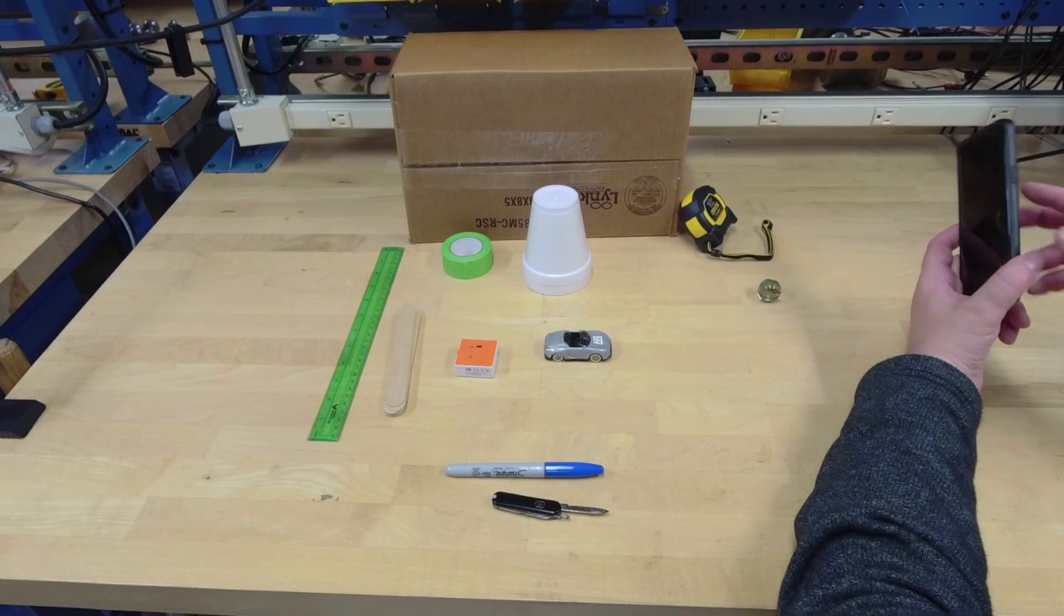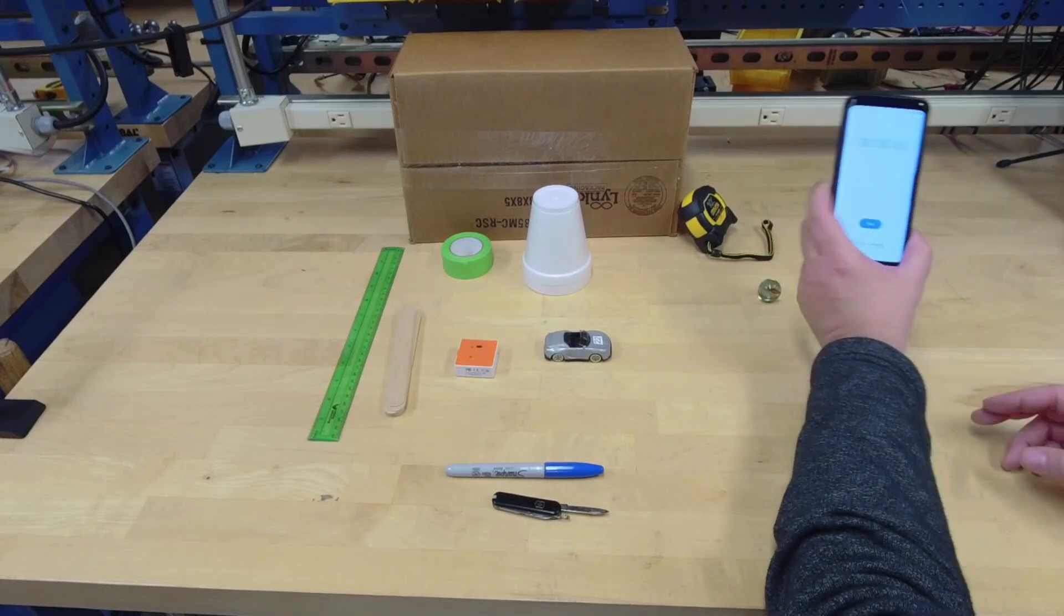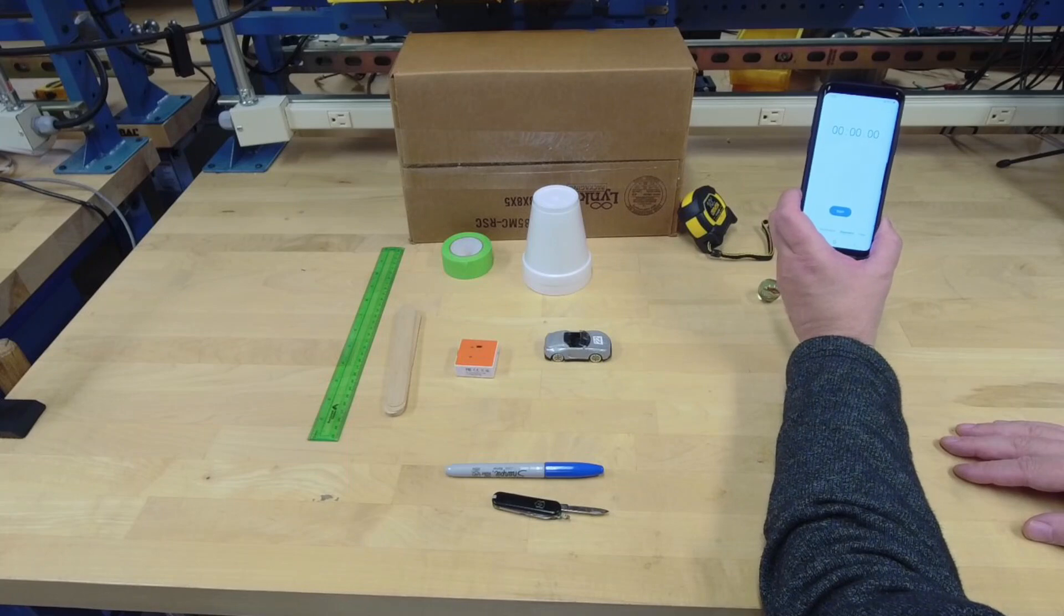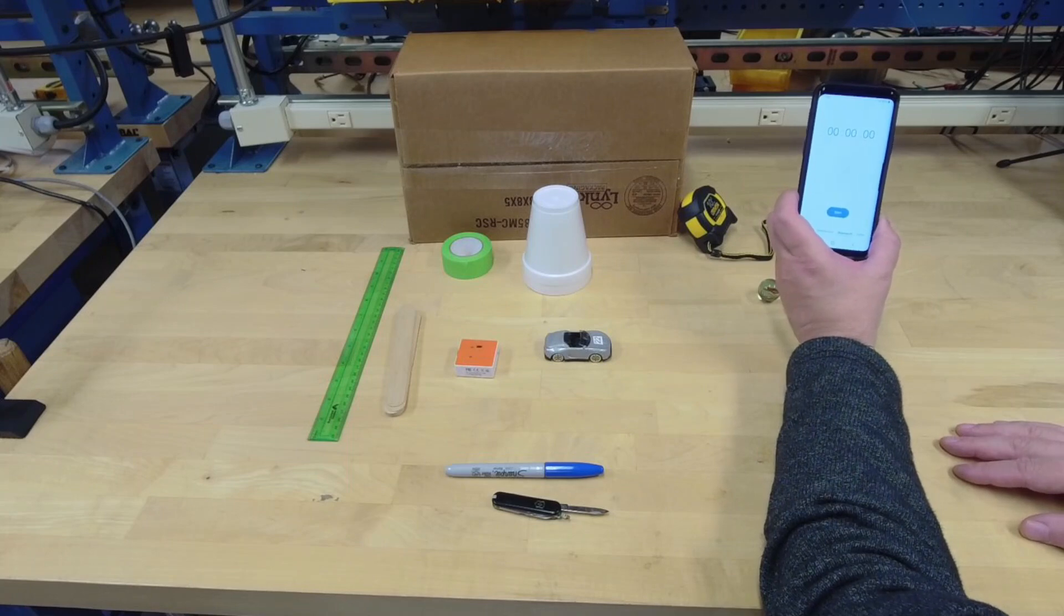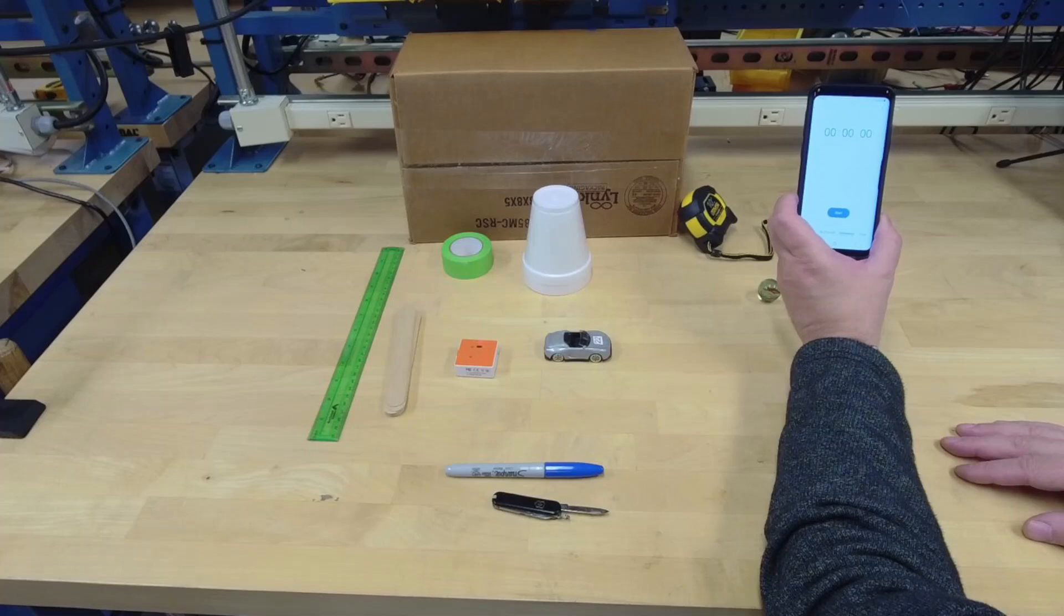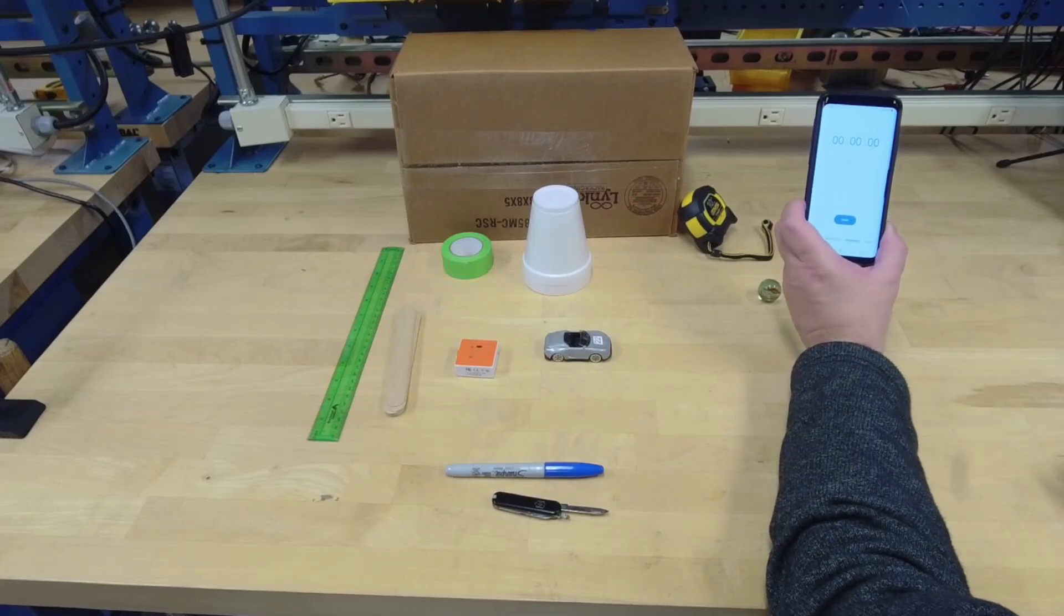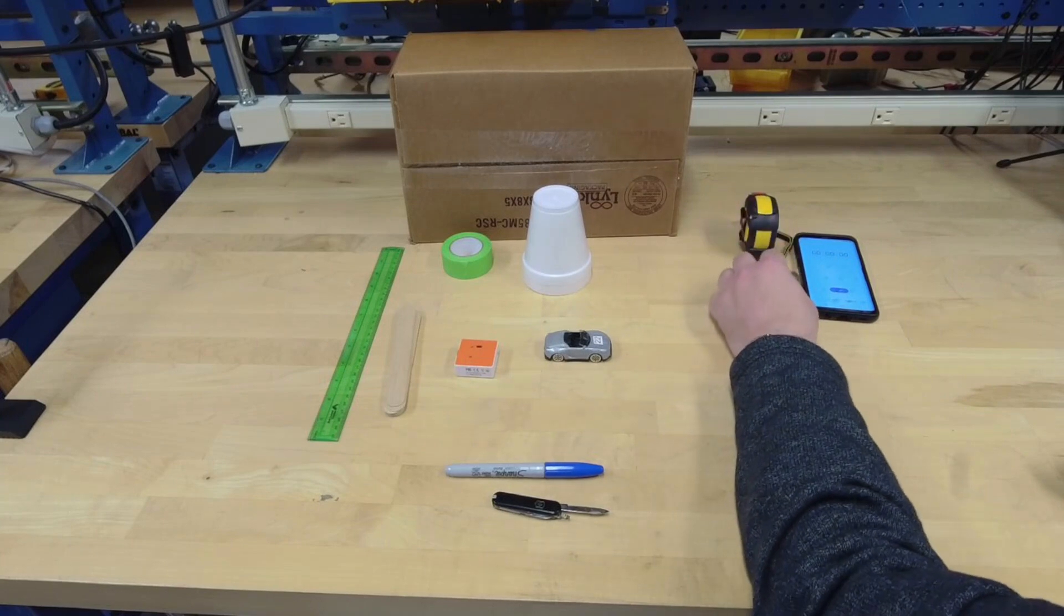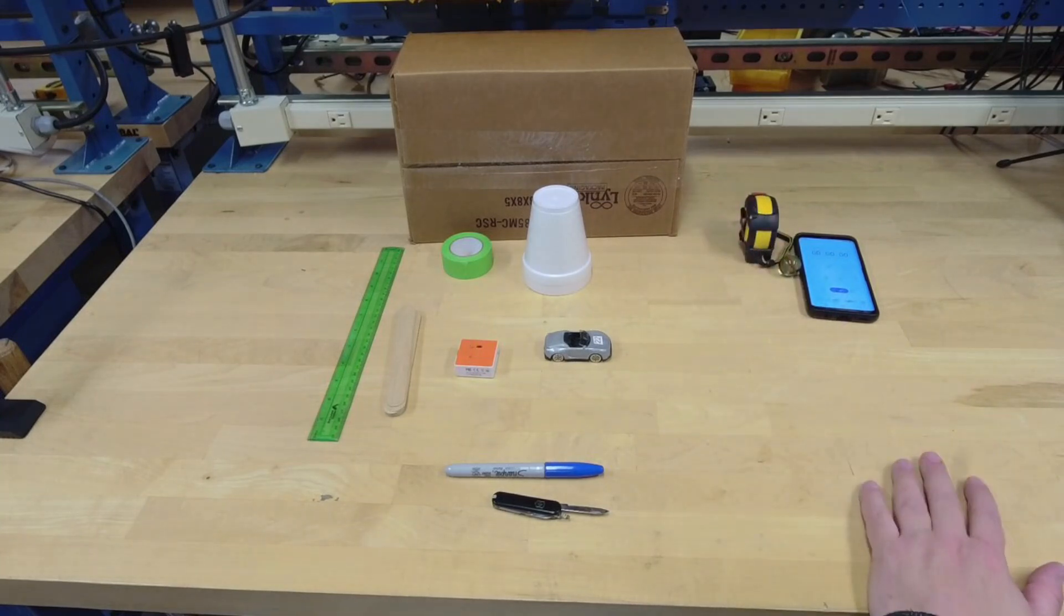You'll also need a stopwatch. If you have one, you can use that, although almost all cell phones have a stopwatch built in. I use Android, so I just hit timer and select the stopwatch function. You can also use a kitchen timer, though that's a little harder to use.